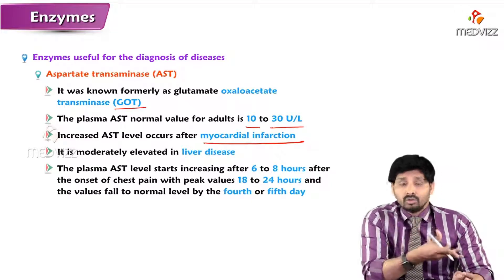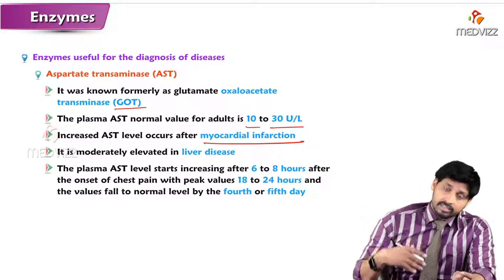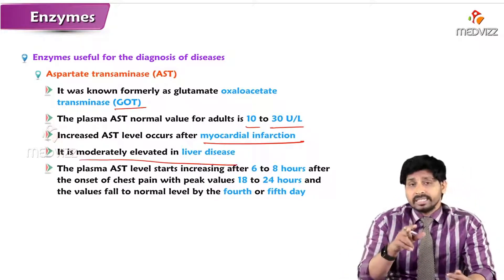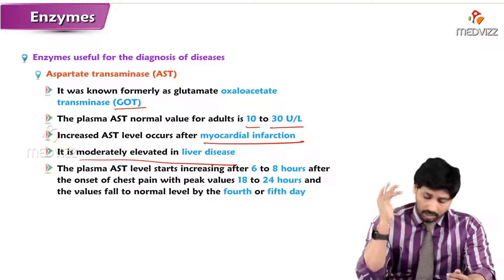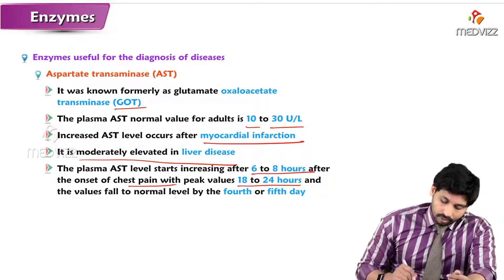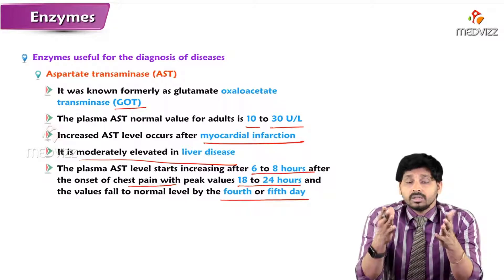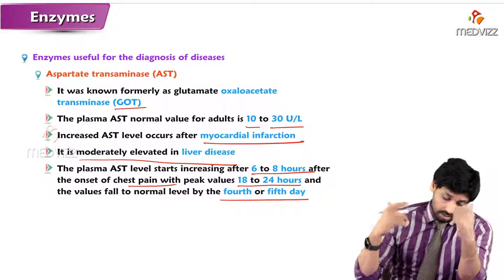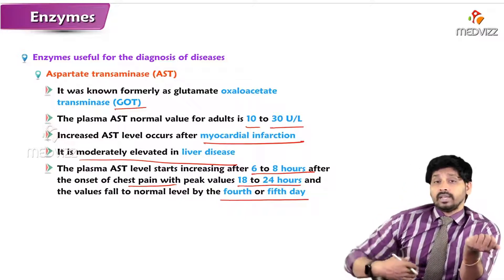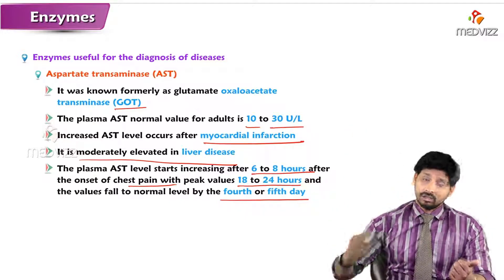In myocardial infarction, damage to cardiac cells releases AST into the plasma along with LDH1 and creatine kinase 2 (CK2). Levels above 50 units per liter indicate a problem with heart cells. AST is also moderately elevated in liver diseases. Plasma AST levels rise six to eight hours after onset of chest pain, peak at 18 to 24 hours, and return to normal by the fourth to fifth day.